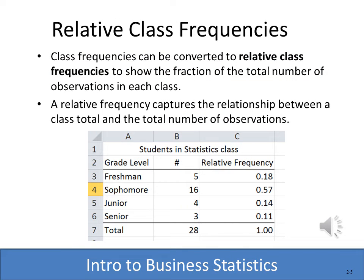Another way that we can look at a frequency distribution is something we call a relative class frequency or relative frequency, and this is kind of a numeric way of displaying a pie chart. You'll notice that we have five freshmen and 16 sophomores, but then we have the relative frequency or the percentage of freshmen, sophomores, juniors, and seniors. In this case, we can notice that sophomores are 57% of the overall class.